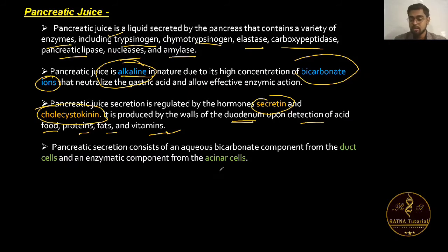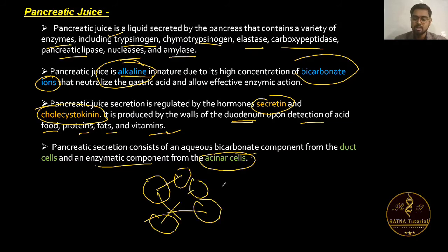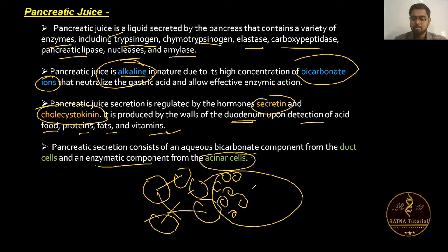The duct cells produce the aqueous bicarbonate component, and the acinar cells produce the enzymatic component. These were the disc-like structures and the various cell types shown in the pancreas diagram.